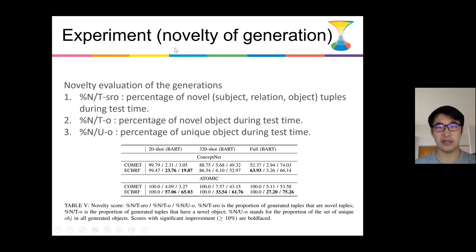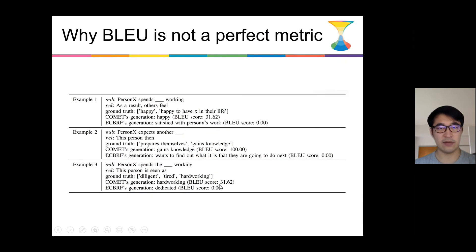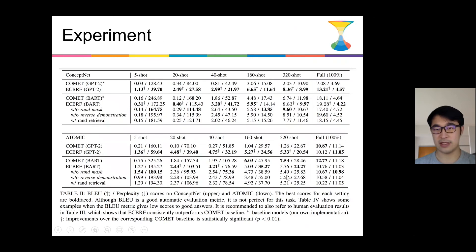We also evaluate the novelty of the generation. As we show in this table, ECBRF's generations are more novel than COMET, especially in ATOMIC datasets where when the train set is large, the ECBRF tends to generate more novel generations than COMET. And this actually matches the result in this table where COMET shows better BLEU than ECBRF.